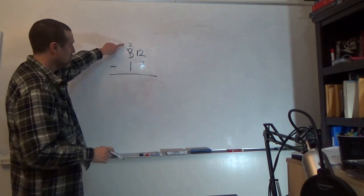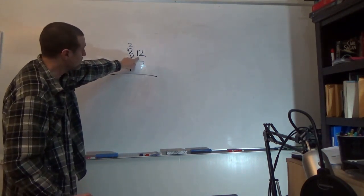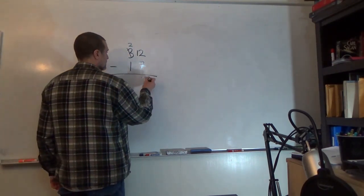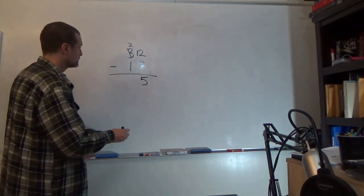And now one of those tens we're going to push over into the ones column, so now it's twelve minus seven. So twelve minus seven is five, and two minus one is one.